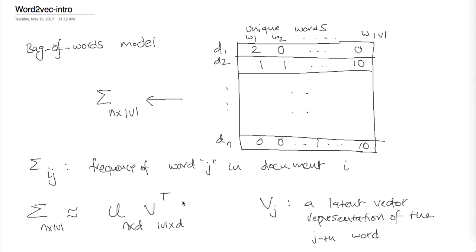This approach is an improvement over the raw term-frequency representation. It's called latent semantic analysis, and the embeddings it produces can be used as indices in information retrieval. The way you retrieve documents is by computing the dot product between the query document and all documents in the collection. That's the classical way of representing word embeddings.